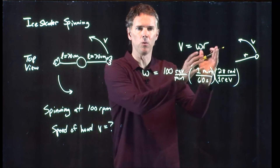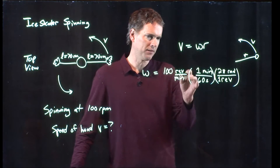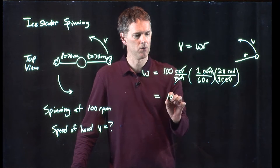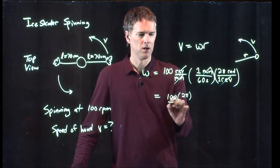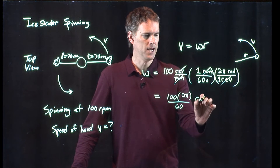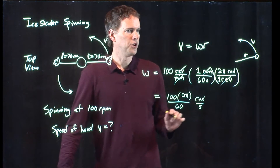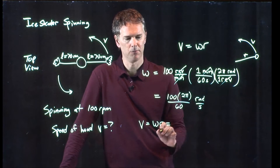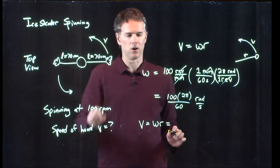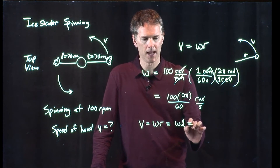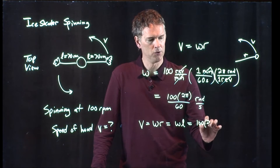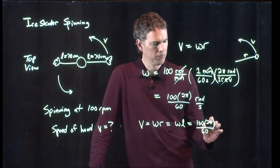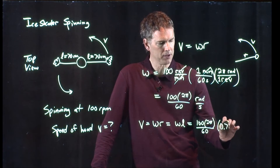We've just multiplied by one each time — just changed the units. Now you can cross out some stuff: revs cancels with revs, minutes cancels with minutes. And we get 100 times 2 pi all over 60 radians per second. So the speed is Omega times R. In this case we called our R as L, so we plug that in. Omega is 100 times 2 pi divided by 60, and L is 70 centimeters, which is 0.7 meters.